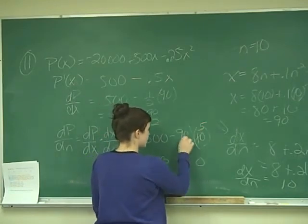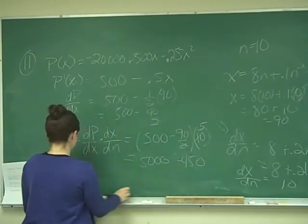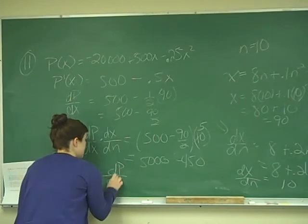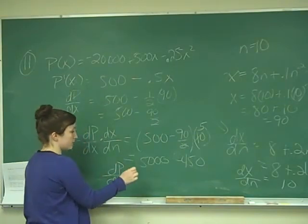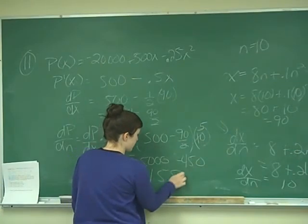This becomes 450. So dp over dn will be equal to 5,000 minus 450 gives me 4,550.